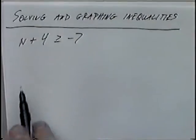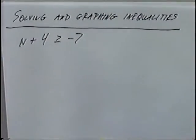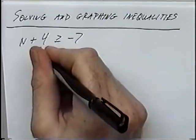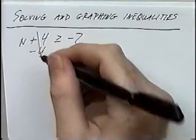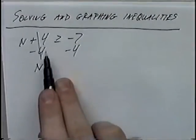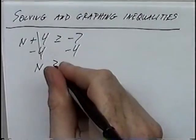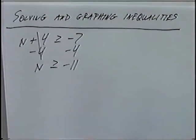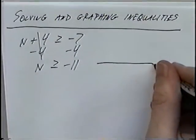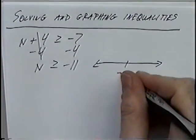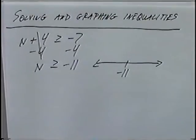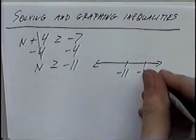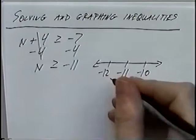We have n plus 4. To isolate n, we subtract 4 on both sides — the 4s cancel. The inequality stays the same when you subtract numbers. Negative 7 minus 4 would be negative 11, so our answer is n is greater than or equal to negative 11. For the graph, negative 11 goes in the middle of the number line, with negative 10 to the right and negative 12 to the left.